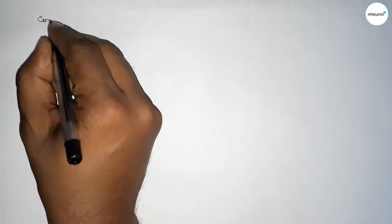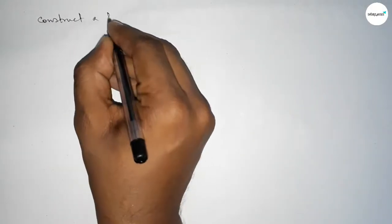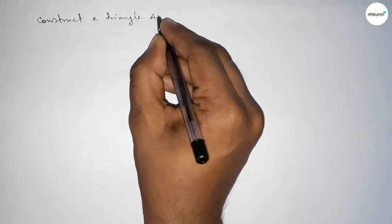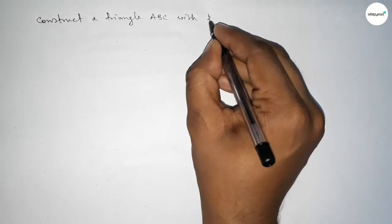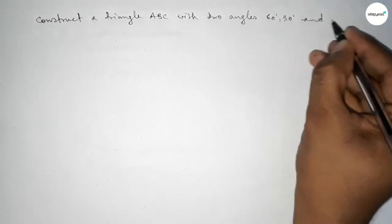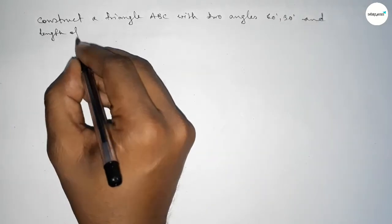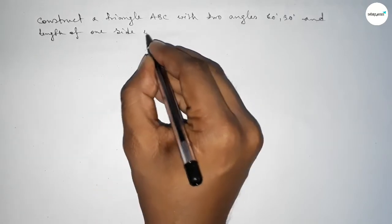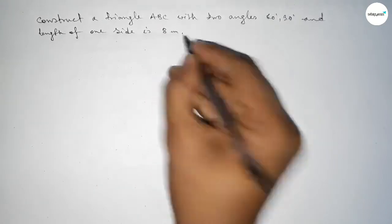Hi everyone, welcome to SI Share Classes. Today in this video, we have to construct a triangle ABC with two given angles, 60 degrees and 30 degrees, and the length of one side is 8 centimeters.